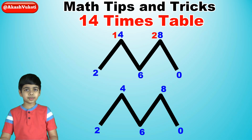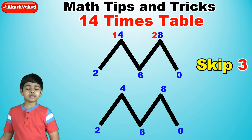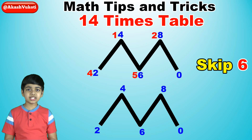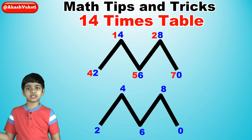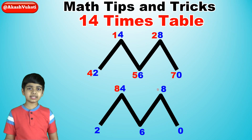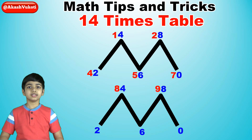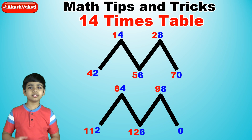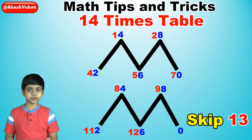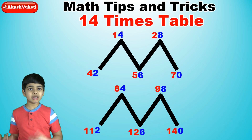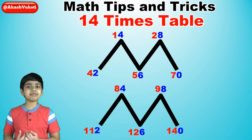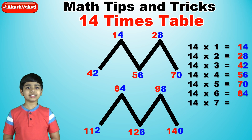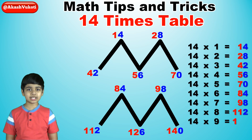So: 1, 2, skip the number 3, so 4, 5, skip the number 6, so 7, 8, 9, skip the number 10, 11, 12, skip the number 13, 14 — and there you have it. And that is the trick to learn the 14 times table.